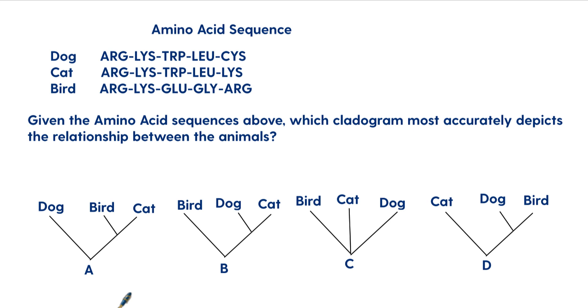All right. Question, the third question here. So at the top, you have amino acid sequence and you have a dog, cat, and a bird. And so you don't need to know these amino acids sequences, what these actually mean. You just have to be able to look at them and say, okay, which ones are similar and which ones are different. And so we'll get to that in a second. Let's look at the question. It says given the amino acid sequence above, which cladogram most accurately depicts the relationship between the animals. So you have four choices, A, B, C, and D here.